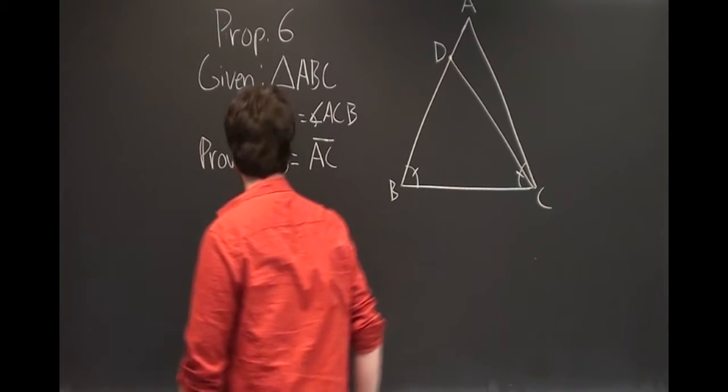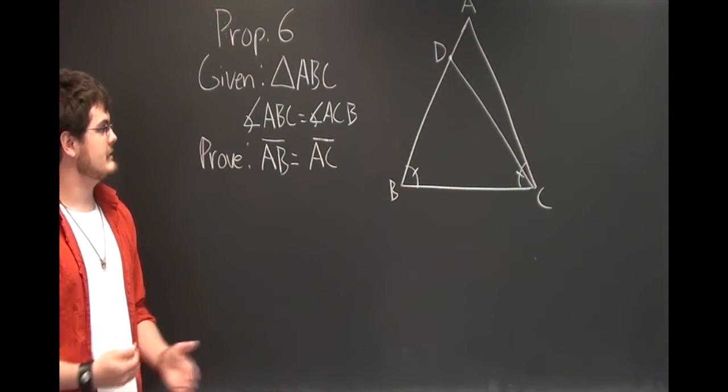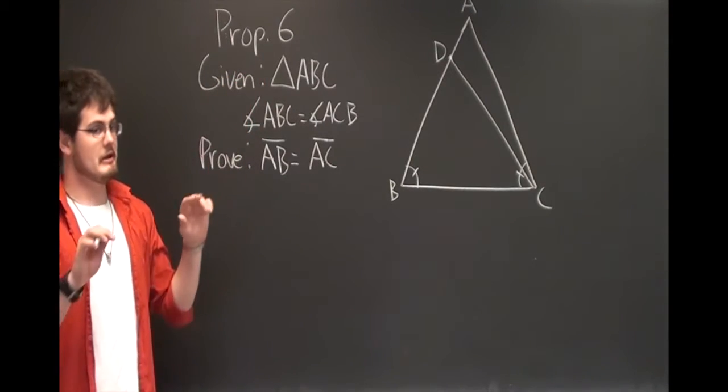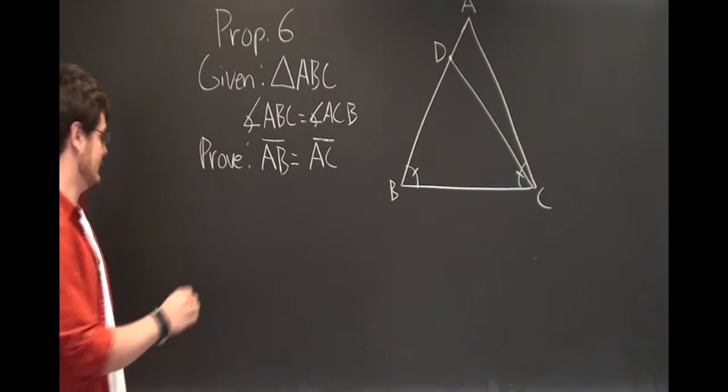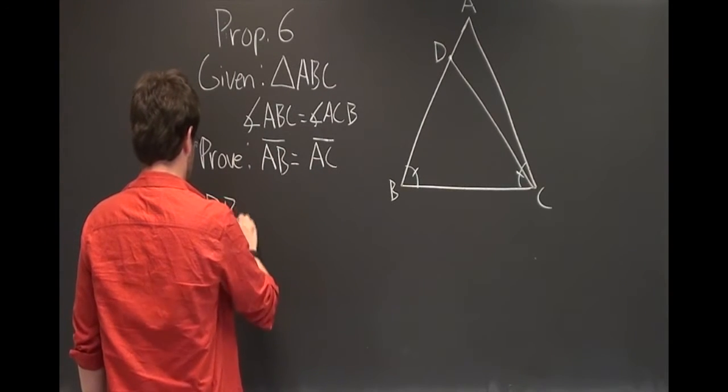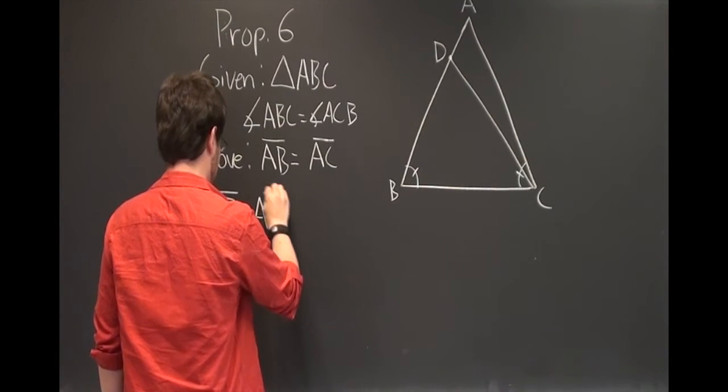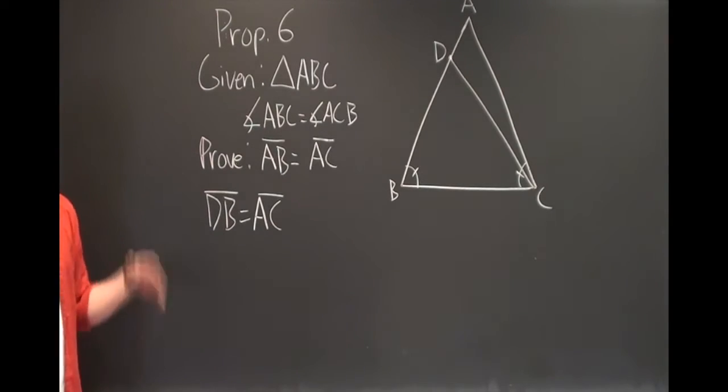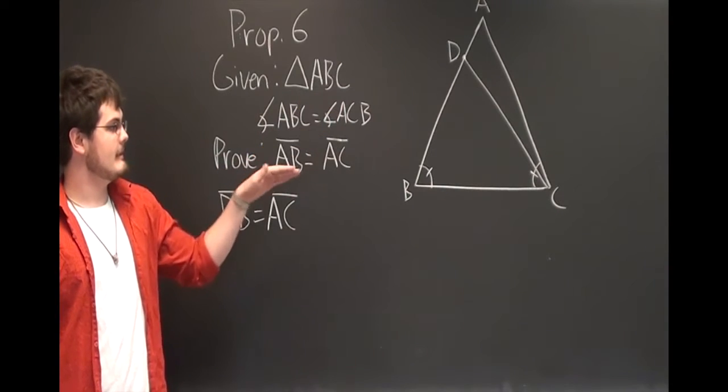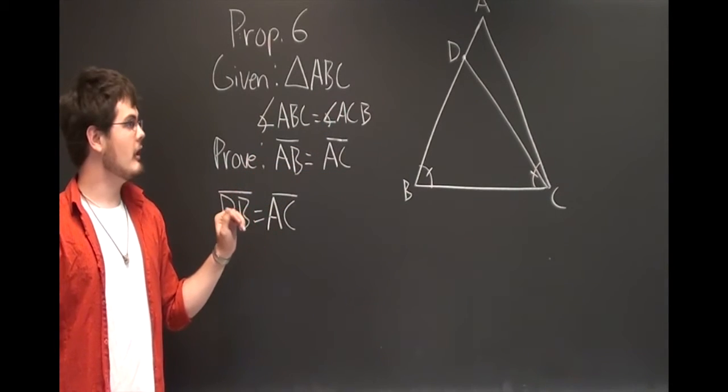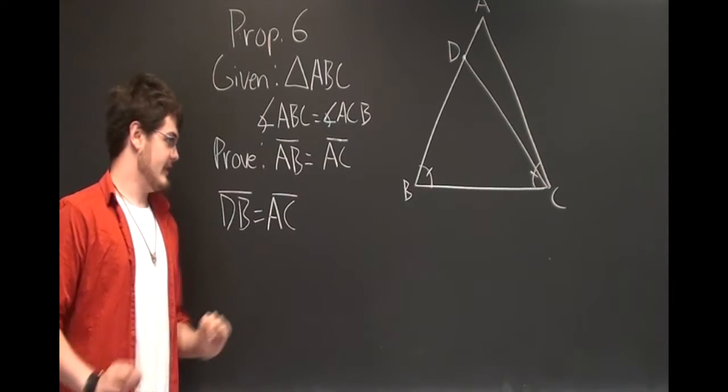All right, so what do we know now? Now we know that in our hypothetical situation DB is equal to AC. Let's write that down. Because we know that, we can say that the sides DB, BC taken together are equal to the sides AC, CB taken together.